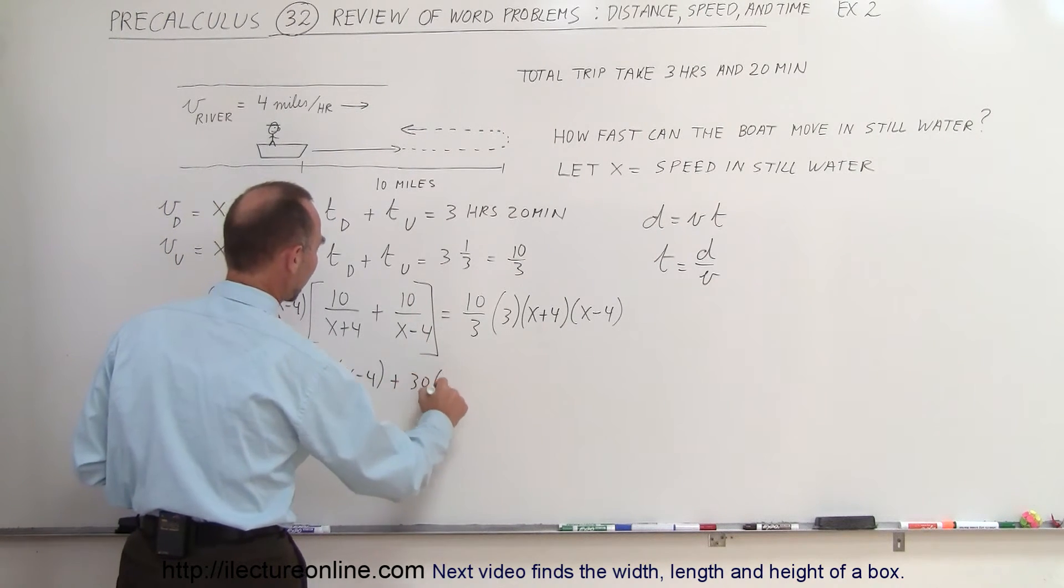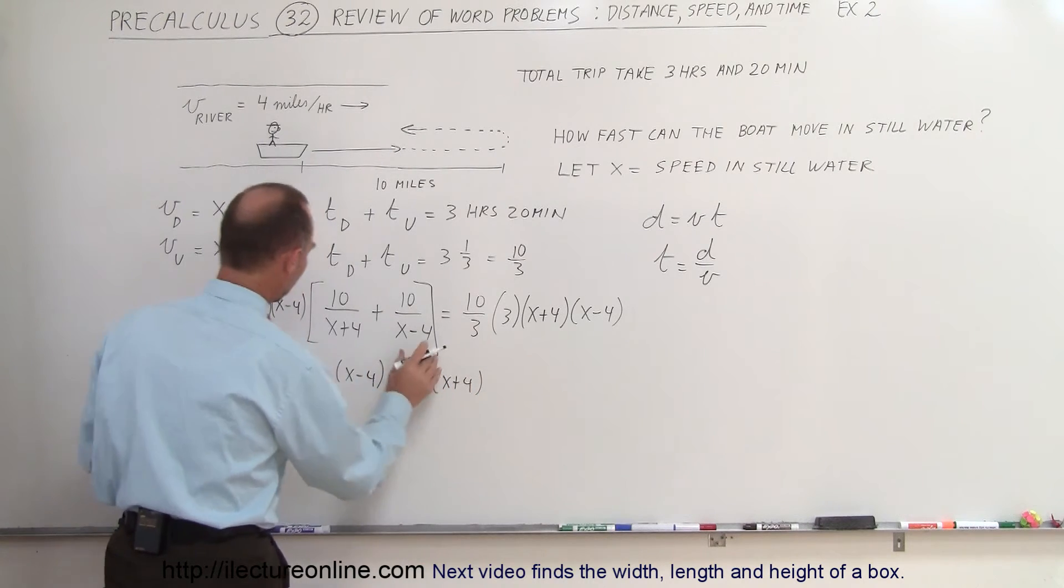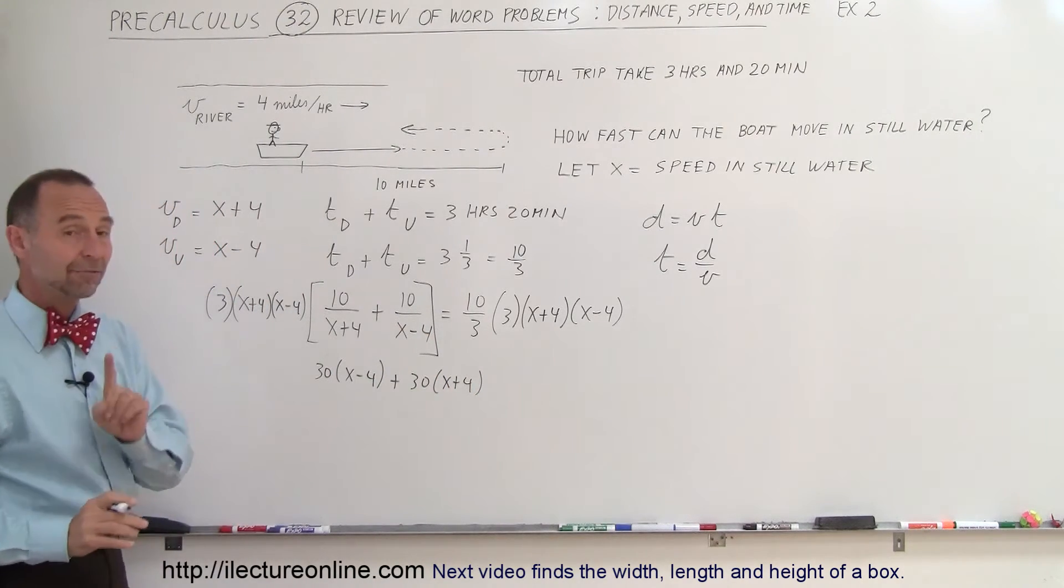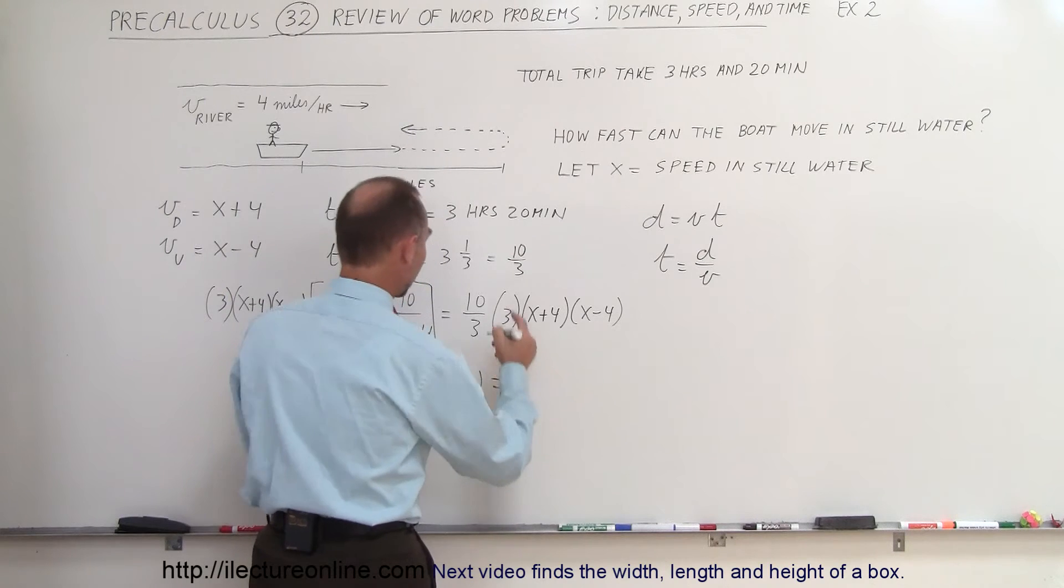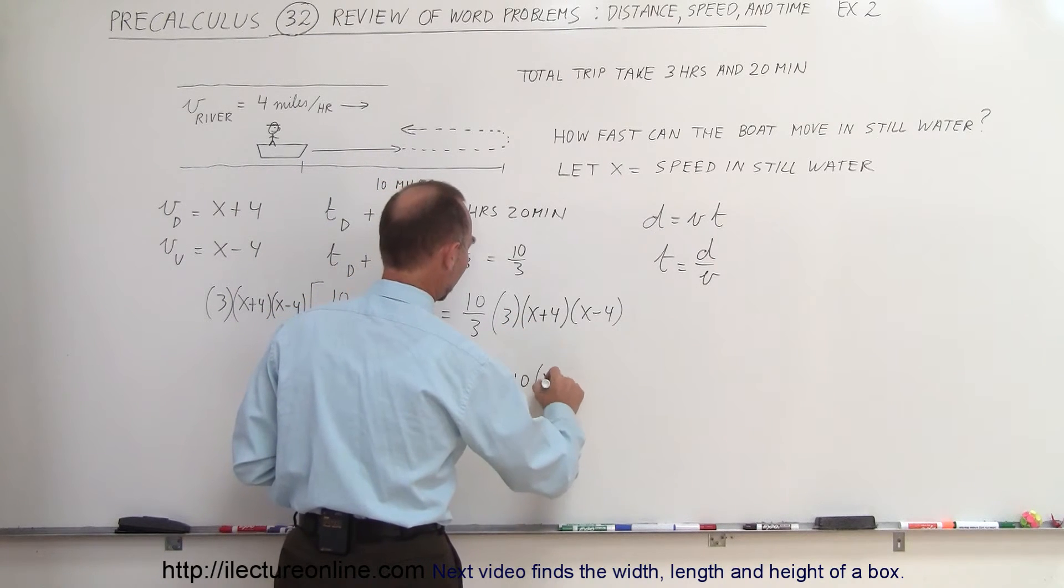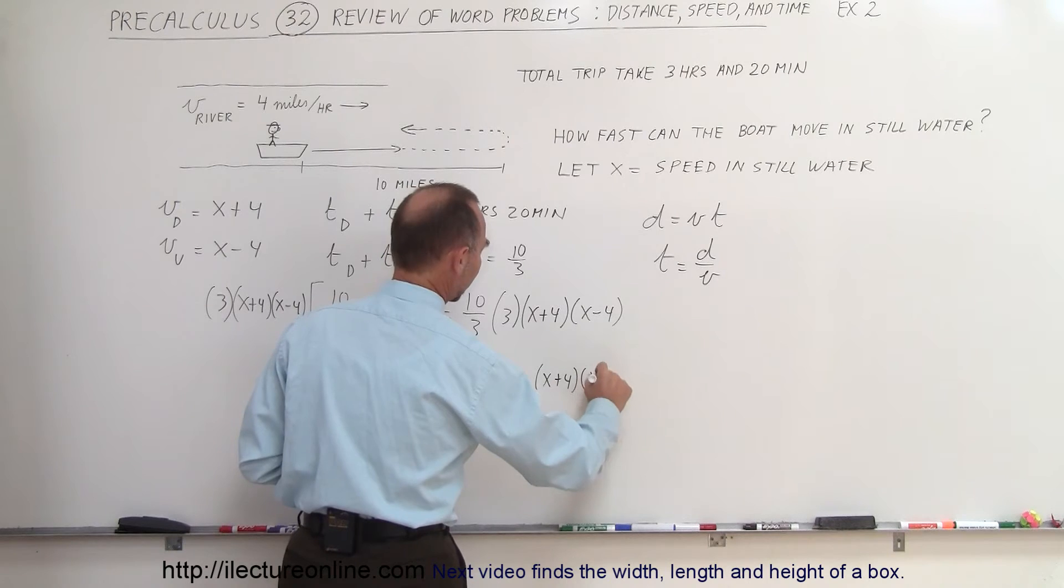Plus, here we're left with 30 times x plus 4, that's because the x minus 4 cancel out, and finally on the right side of the equation, the 3's cancel out, and we're left with 10 times x plus 4 times x minus 4.